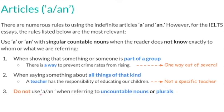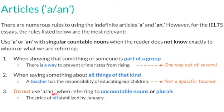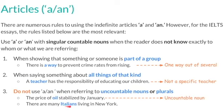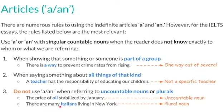You should not use 'a' or 'an' if you're referring to uncountable nouns or plurals. For example: 'The price of oil stabilized by January.' The word 'oil' is an uncountable noun — we cannot count oil. Here's another example: 'There are many Italians living in New York.' The word 'Italians' is plural, so since we have a plural noun, we cannot use any indefinite articles with it.